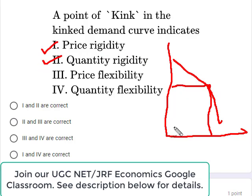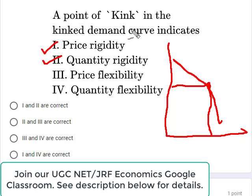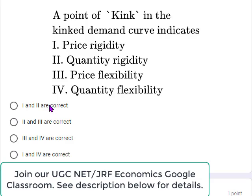This concept will be explained in detail in a separate video. For now, remember that the kink point shows price rigidity and quantity rigidity. Also remember that this hypothesis was given by Paul Sweezy and it is related to oligopoly. So the correct option should be 1 and 2.